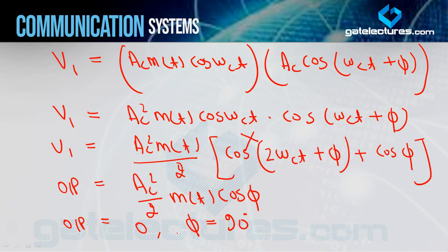Therefore the transmitter and receiver carriers must be synchronized in terms of phase. This error — where putting φ = 90° gives zero output — is called the quadrature null effect. We studied the same concept when we studied demodulation for DSB-FC. The same concept applies here too, nothing has changed. So regarding quadrature null effect, both DSB-SC and DSB-FC are the same. But yes, one improvement was there for power: DSB-SC is better than DSB-FC in terms of power. That is the demodulation technique in the case of DSB-SC. If you have any doubt, you can post in the comment section. Thank you.